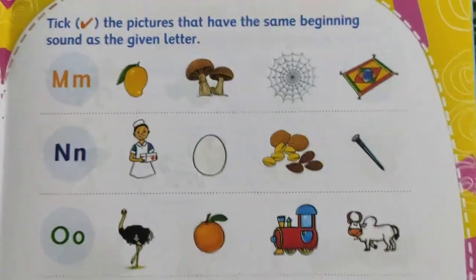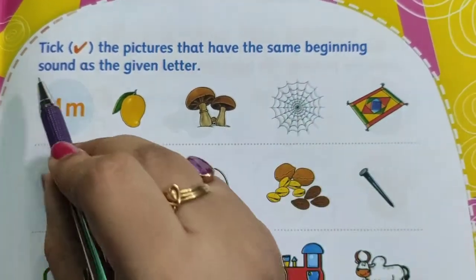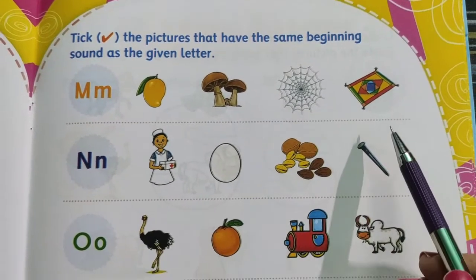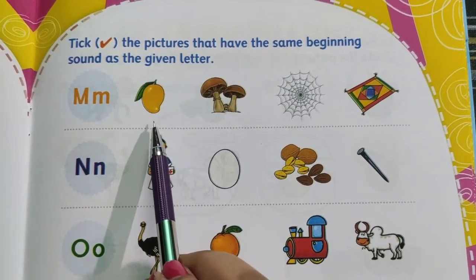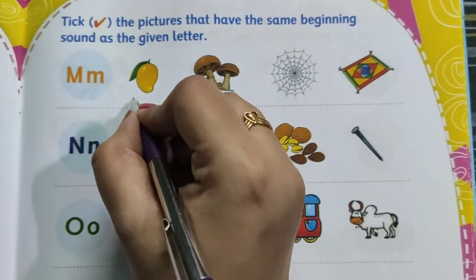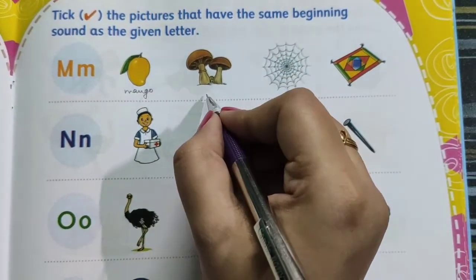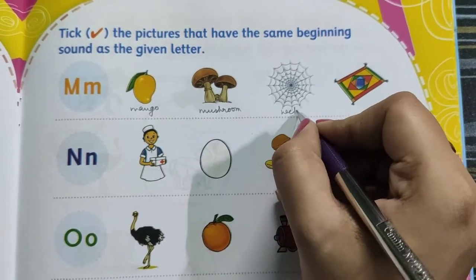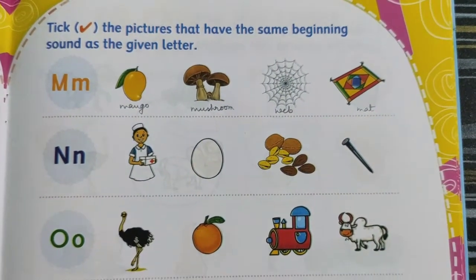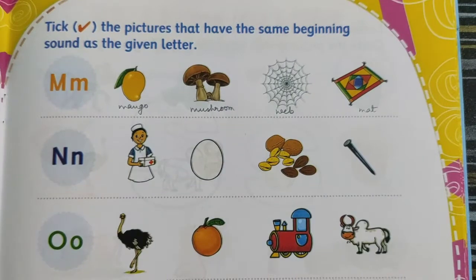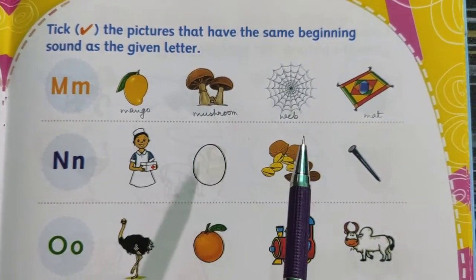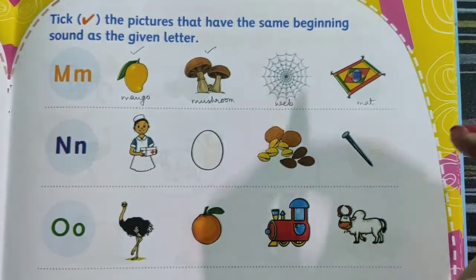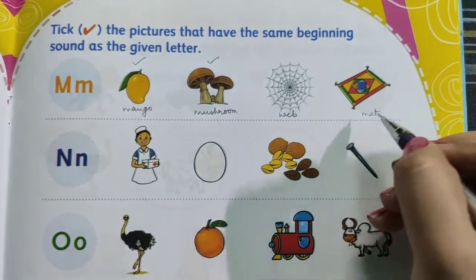Page number 35. Tick the pictures that have the same beginning sound as the given letter. On the left side you can see letters are given, and you have to put a tick mark on the pictures with the same beginning sound. First write the pictures' names: mushroom, M-U-S-H-R-O-O-M; spider web; mat, M-A-T. The letter given is M, so tick the pictures starting with M — mango, tick mark; mushroom, tick mark. Web starts with W, no tick mark. Mat starts with M, tick mark.